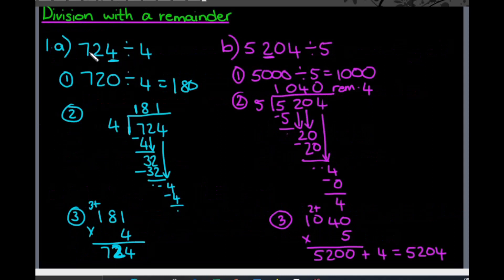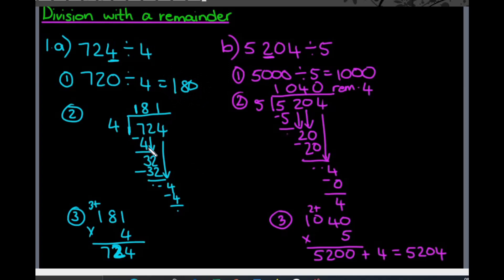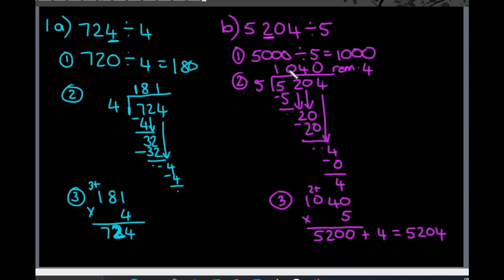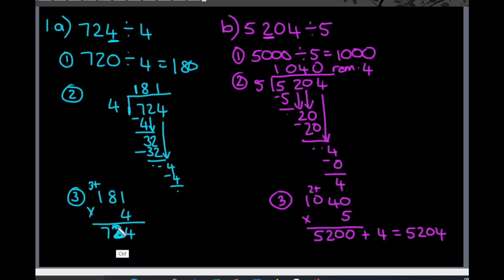In 1a, we had 724 divided by 4. We first had to estimate our answer. I rounded 724 to the nearest 10, giving 720 divided by 4. 4 is too small to round up to the nearest 10, so I left it at 4, giving an estimate of 180. My answer should be around 180. Working it out using long division, my answer is 181. There is no remainder in this question. To check, I multiplied 181 by 4 and ended up with 724.